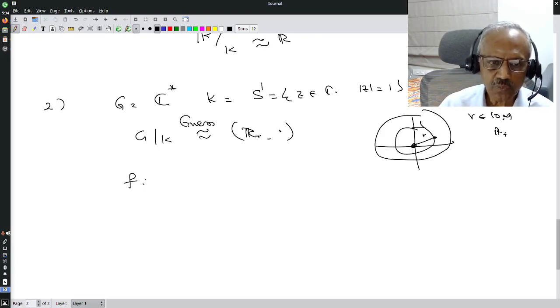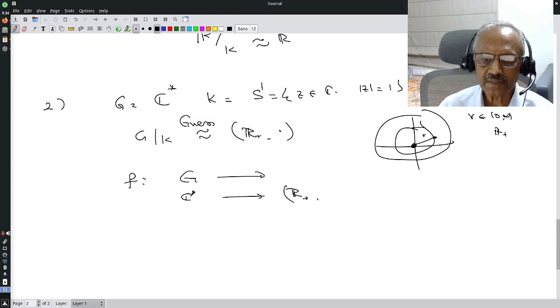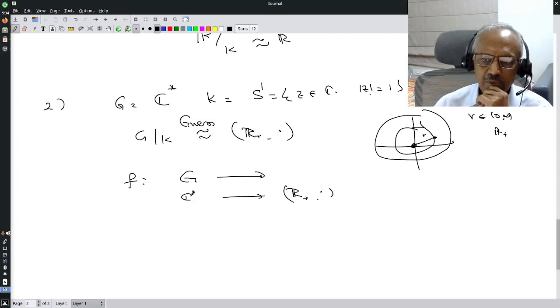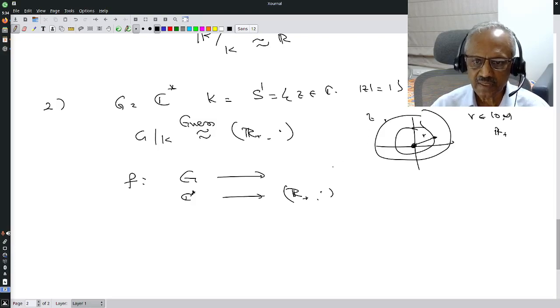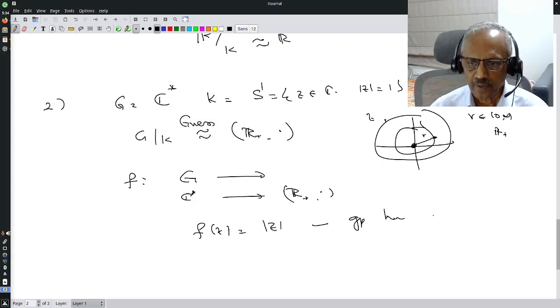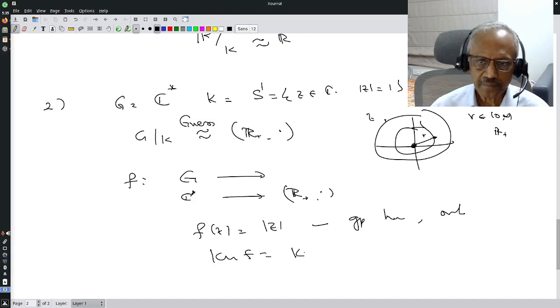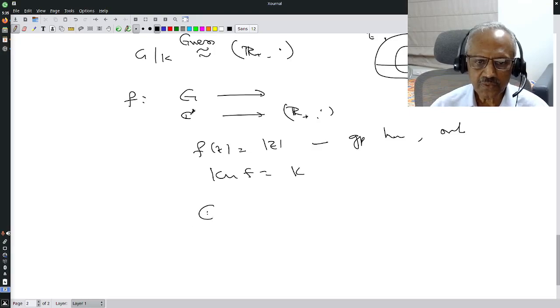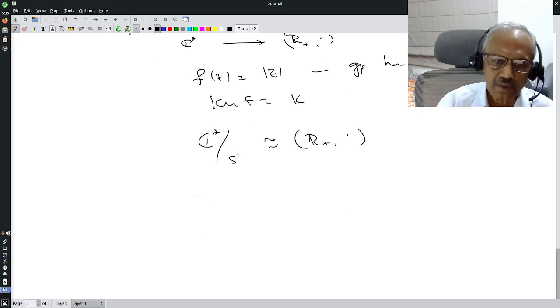This is my guess. How do I prove that? I have to look for a group homomorphism from C* to R⁺ under multiplication. What should that be? The kernel should be S¹. If I start with any z here I want it to go here and the kernel should be mod z equal to 1. So the obvious guess is F of z equal to mod z. This is a group homomorphism and is onto, and the kernel of F is precisely the circle group K. Hence I know C* mod S¹ is isomorphic to R⁺ under multiplication.